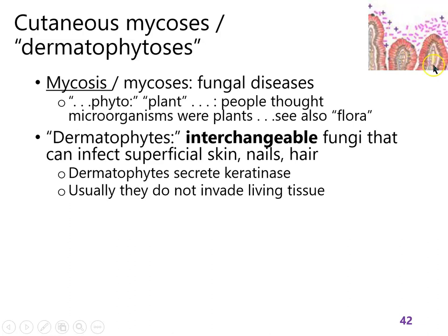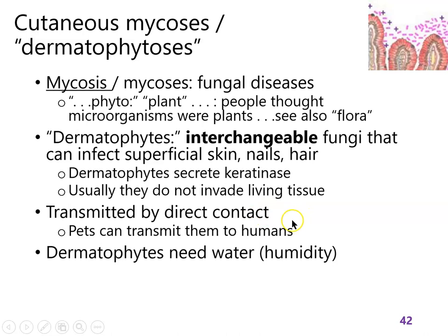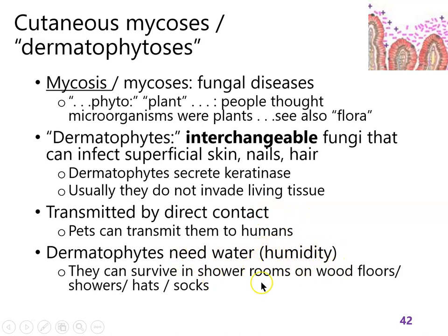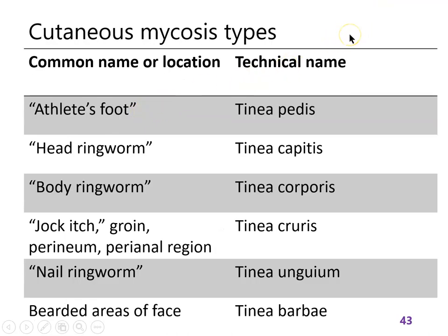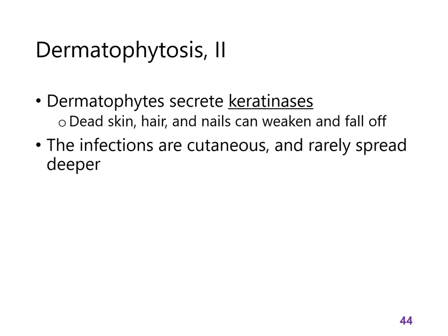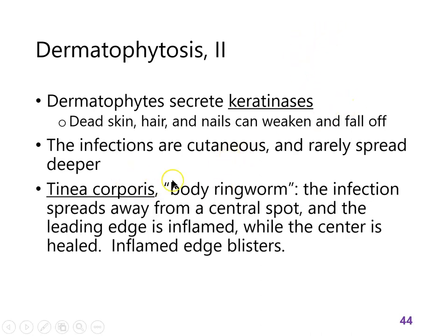People get dermatophytoses from direct contact with pets and animals, but only in situations where there's humidity. Athlete's foot, for example, is named because people would get it from shower rooms like locker rooms — when skin touches a surface in a locker room, that skin is at risk of getting a dermatophytosis. The term 'phyto' means plant, reflecting how people historically named microorganisms after plants. These are also called cutaneous mycoses and are named after where they occur on the body.